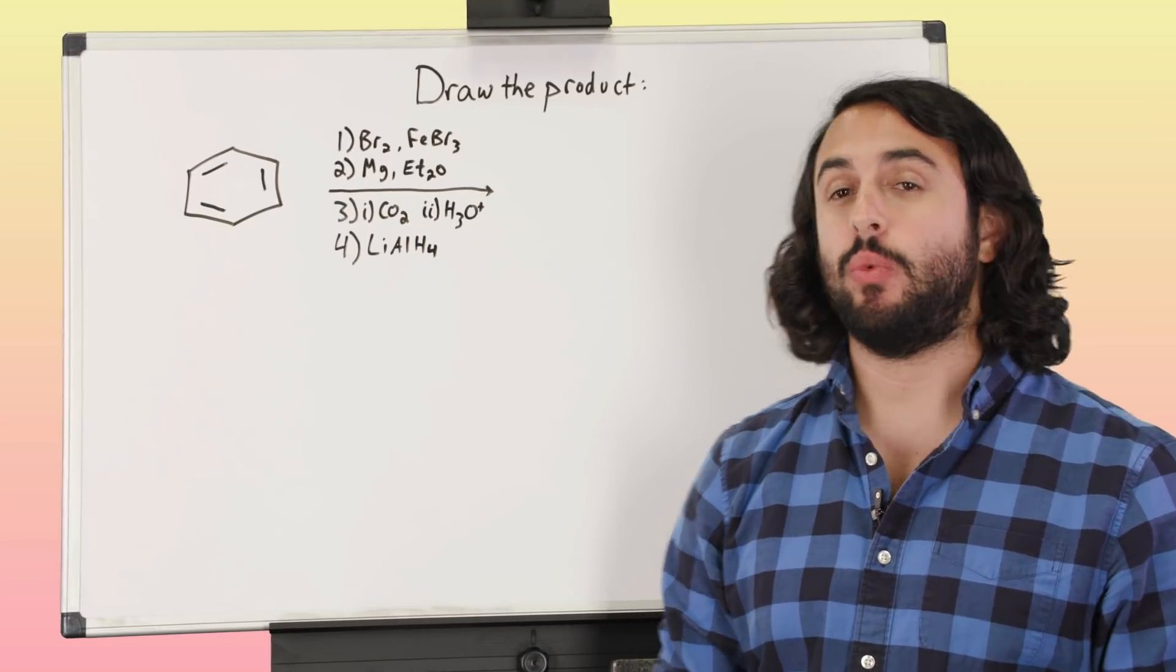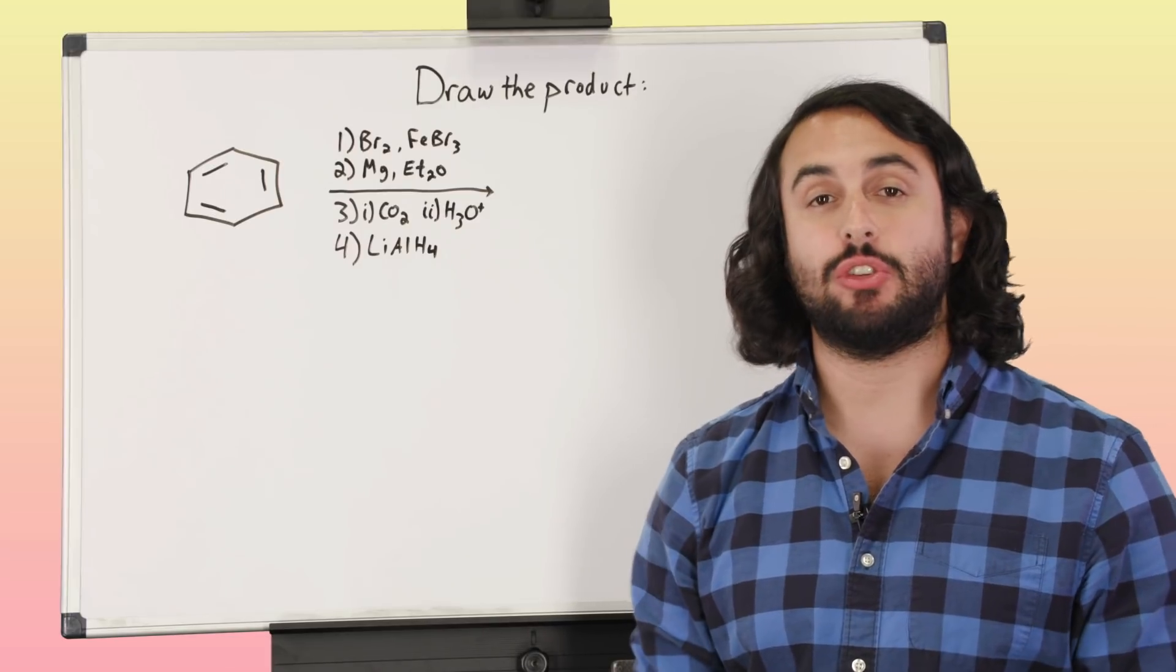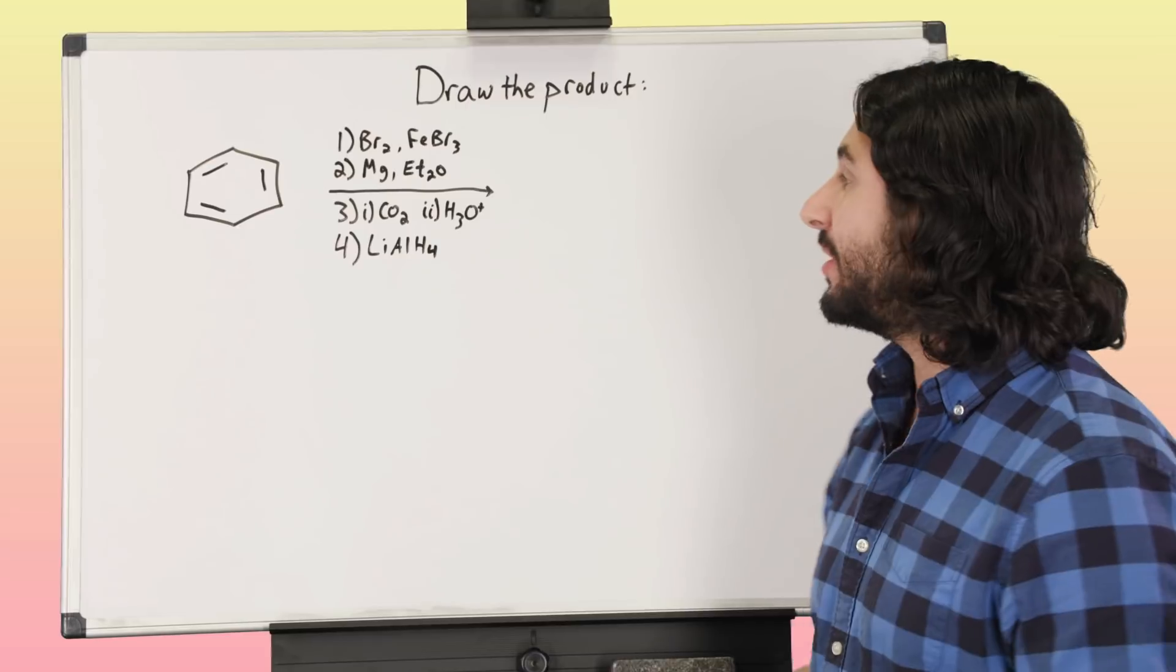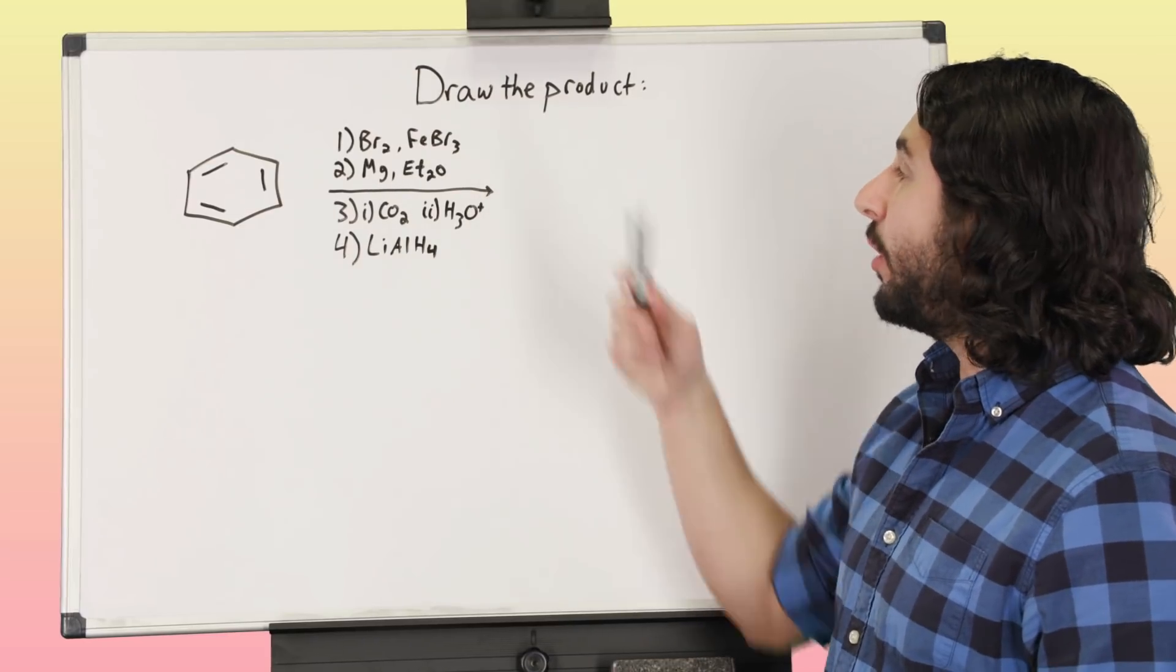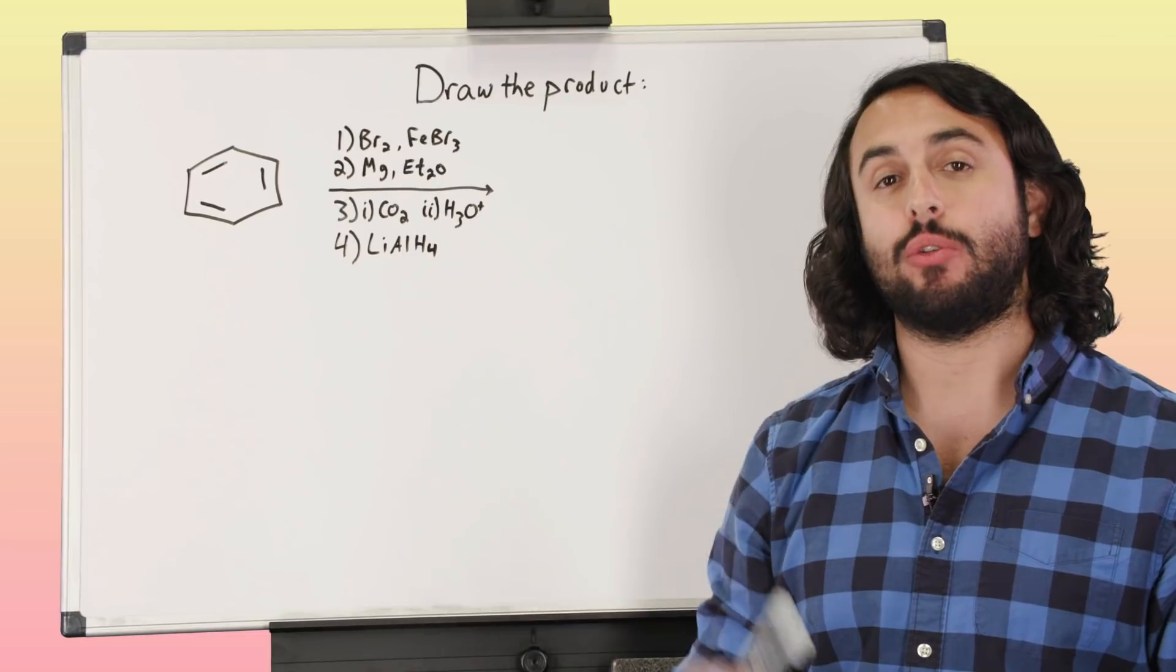Okay, so for this practice problem we have benzene, and we are going to subject this to a series of four sets of reaction conditions. Take a look at these and think about what reactions we might need to be using, and see if you can come up with the correct product.